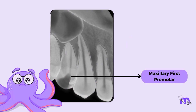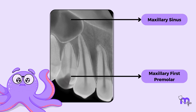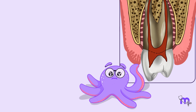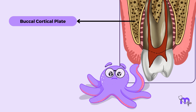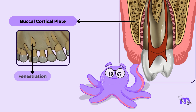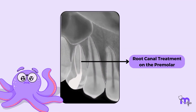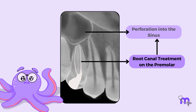Did you know? The maxillary first premolar lies right below the maxillary sinus and is separated from it by a thin layer of spongy and compact bone. Also, the buccal surface of the premolar is close to the buccal cortical plate, which may sometimes result in fenestration or dehiscence. Therefore, a root canal treatment on the premolars could result in perforation into the sinus through the thin bone, or may complicate the treatment due to buccal plate proximity.